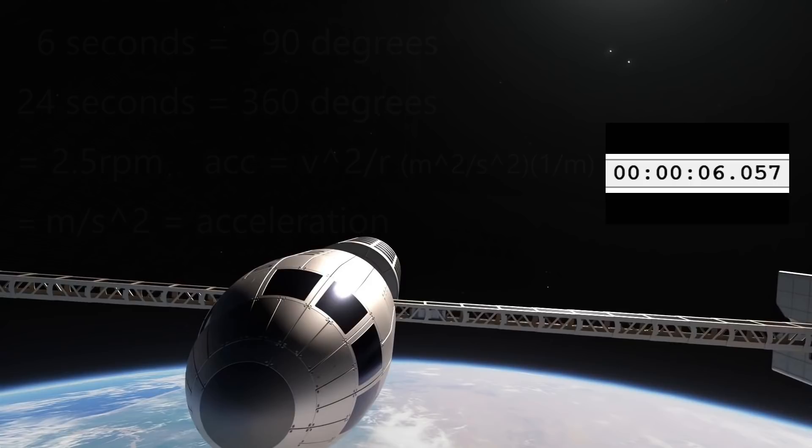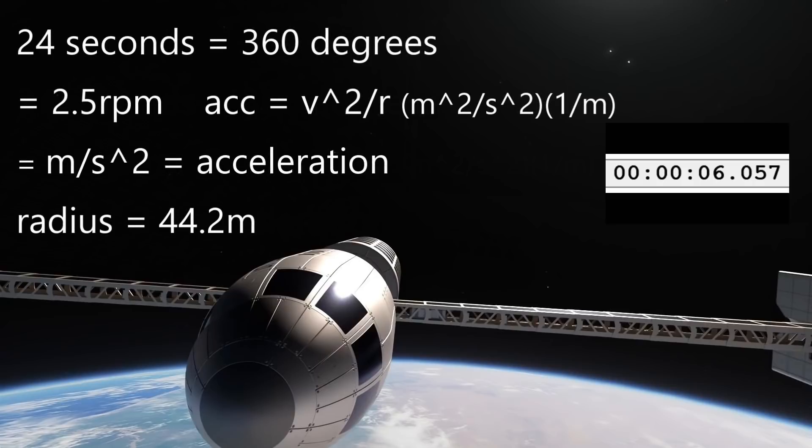Well if the radius is 44.2 meters, as we calculated above, that would give the circumference of this full circle as 2πr or about 278 meters.